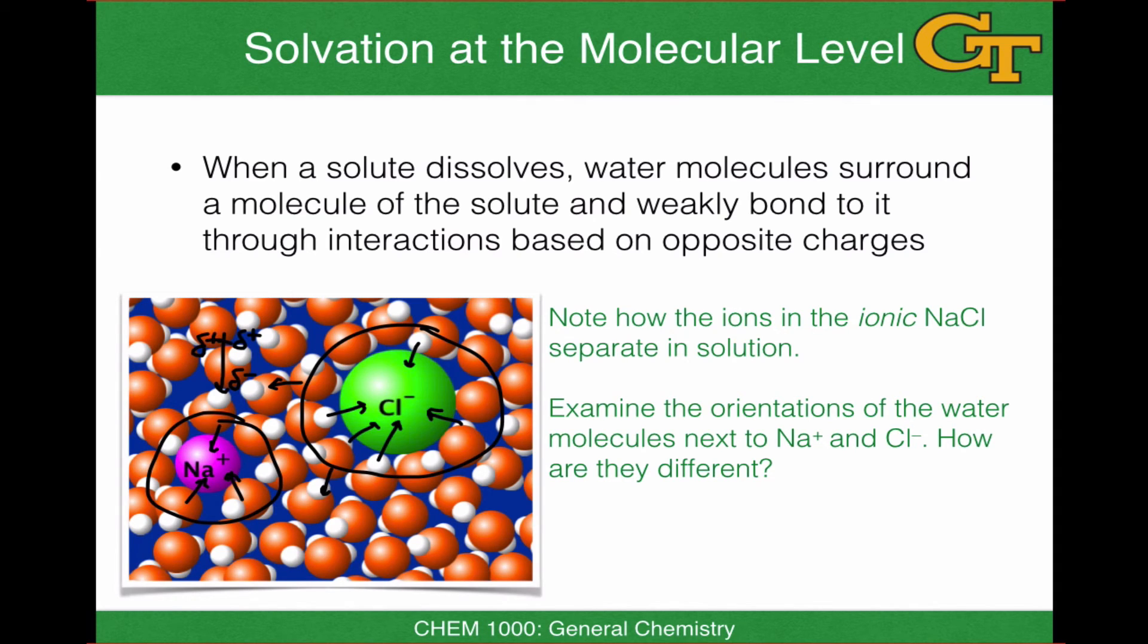As a consequence, the negative end of water's dipole is on the oxygen atom, and that negative end of the dipole is attracted strongly to the positively charged sodium cation. The exact opposite situation holds true for the negative chloride anion. The positive end of the dipole, near the hydrogens, is attracted to Cl-, leading to the hydrogens positioning themselves closer to the chloride anion.